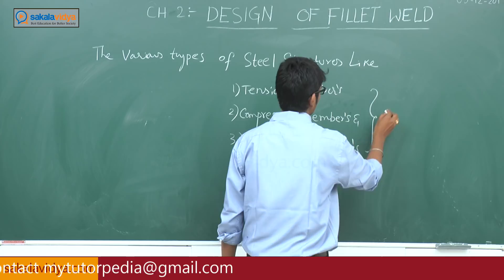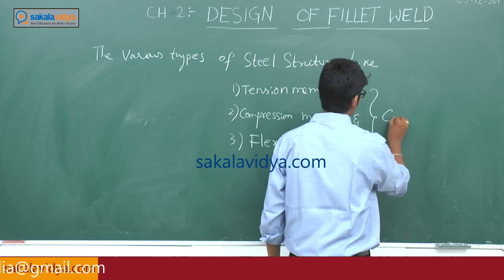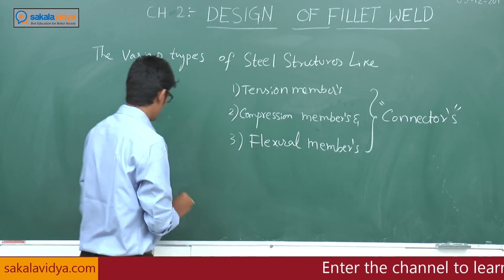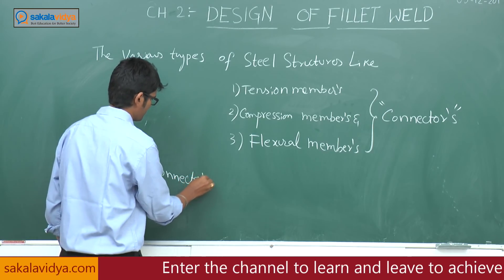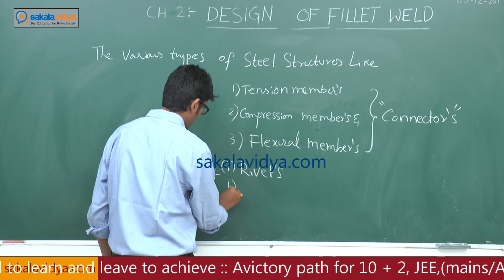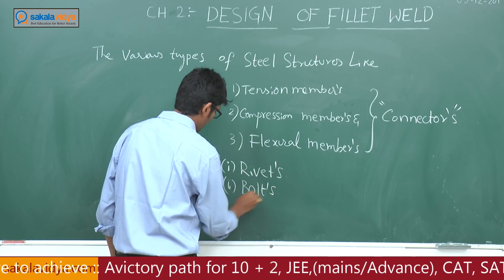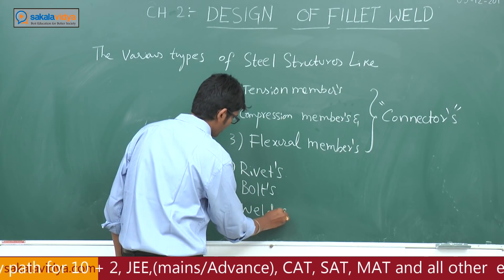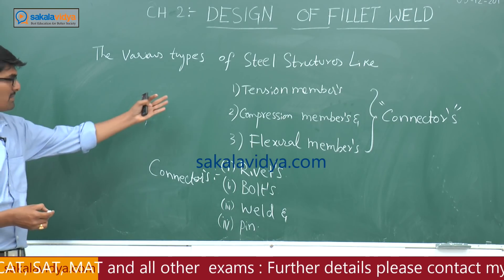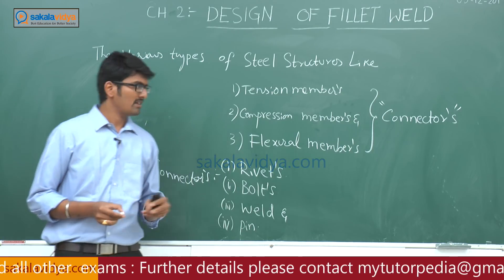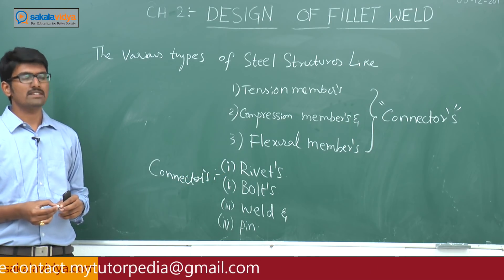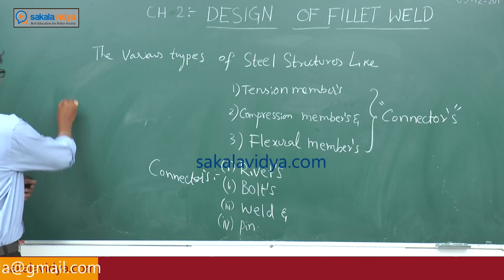The various types of steel structures — tension members, compression members, and flexural members — are all connected together by means of connectors. The various types of connectors are: first, rivets; second, bolts; third, welds; and fourth, pins. All three categories of steel structures are joined using these four types of connectors.